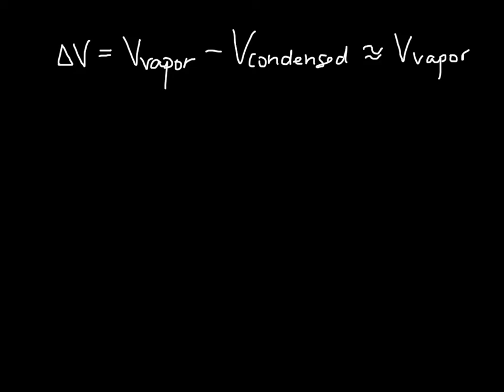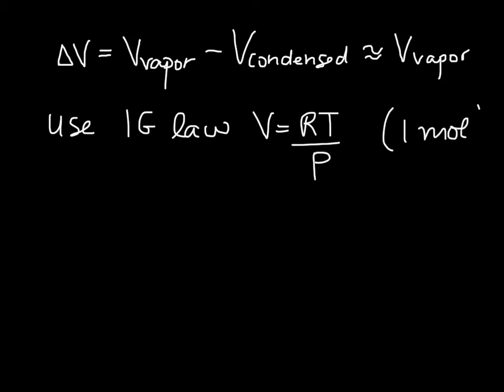We can then use the ideal gas law to get at that, right, so we know that V is equal to RT divided by P for one mole, and so we can plug that in then to the Clapeyron equation.